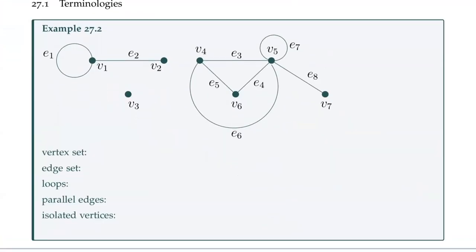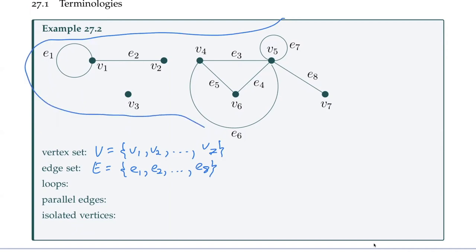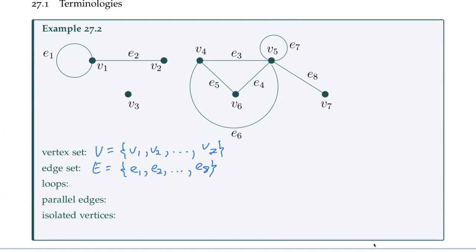For this example, our vertex set V is just going to be the vertices V1, V2, and so on up to V7. And our edges are E1, E2, and so on up to E8. Note that we can classify this as still one graph even though it's not connected. There's no connection between all of the vertices here, but we can still treat this as one graph.